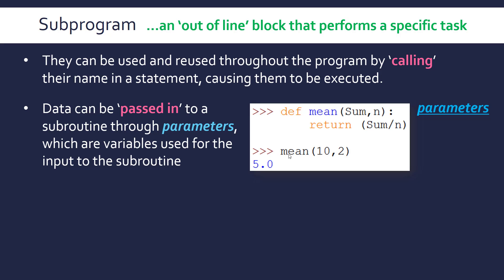This is calling it by specifying its name, and then it jumps back to execute whatever's in the subprogram. Parameters are the general name for the variables; also sometimes the actual data values supplied are called arguments. So parameters are the variable names used as templates, whereas arguments are the actual data values passed in. But often 'parameters' is used for both, so bear that in mind.